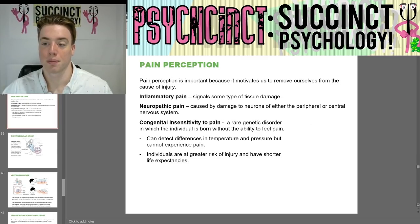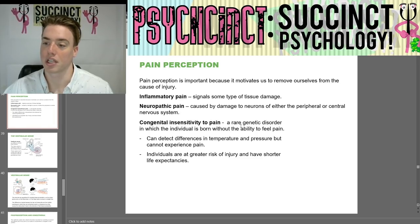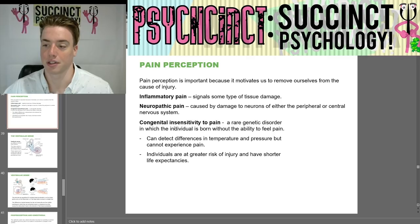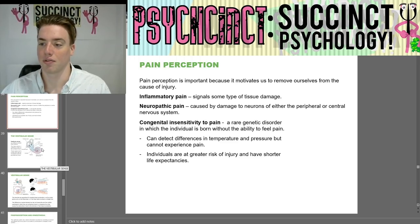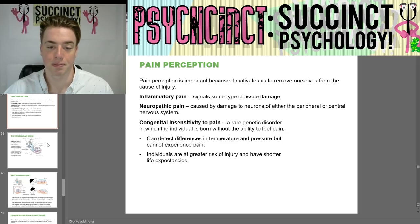Next we have pain perception. Pain perception is important because it motivates us to remove ourselves from the cause of injury. Inflammatory pain, like arthritis, signals some type of tissue damage. Neuropathic pain is caused by damage to neurons of either the peripheral or central nervous system. Congenital insensitivity to pain is a rare genetic disorder in which an individual is born without the ability to feel pain — they can detect differences in temperature and pressure, but cannot experience pain. Individuals with this condition are at greater risk of injury and have shorter life expectancies.